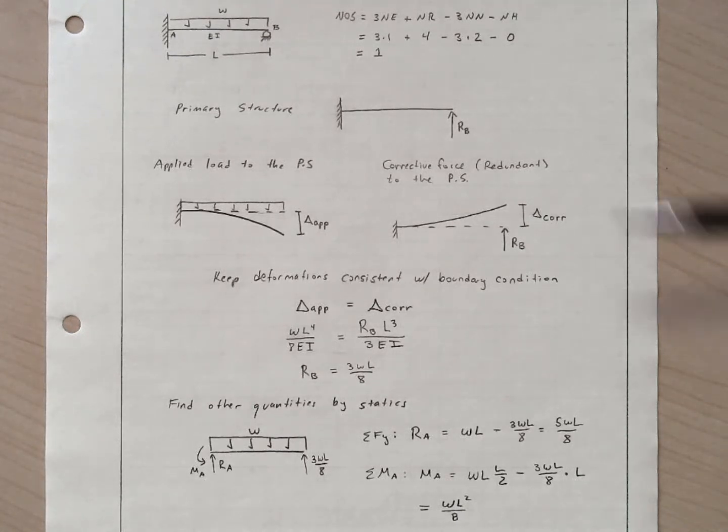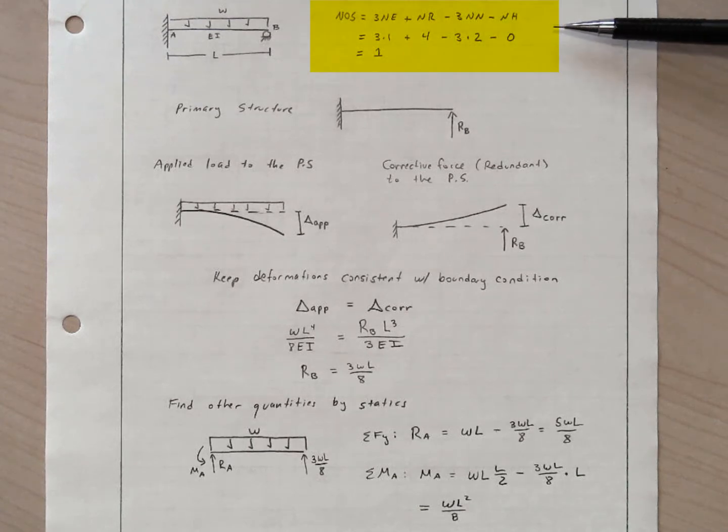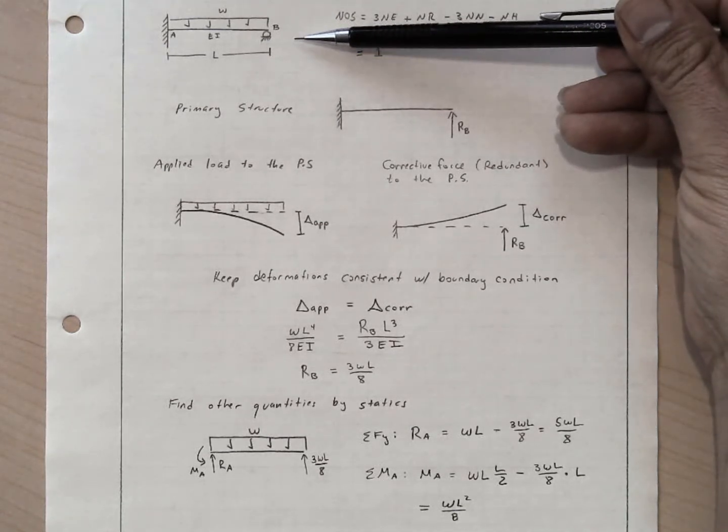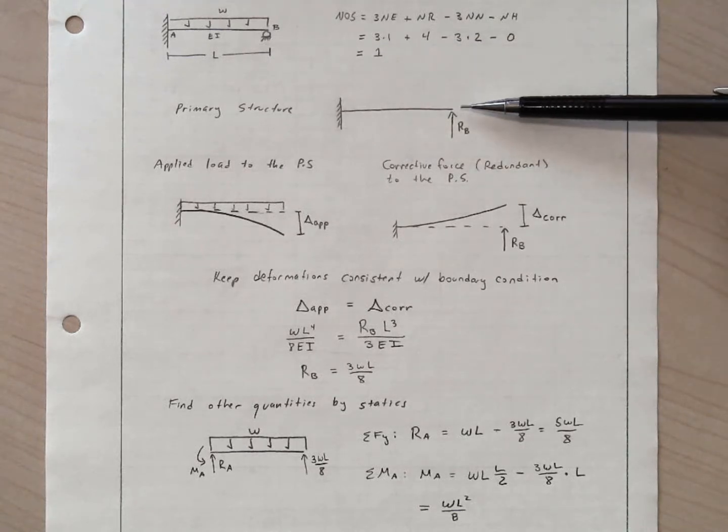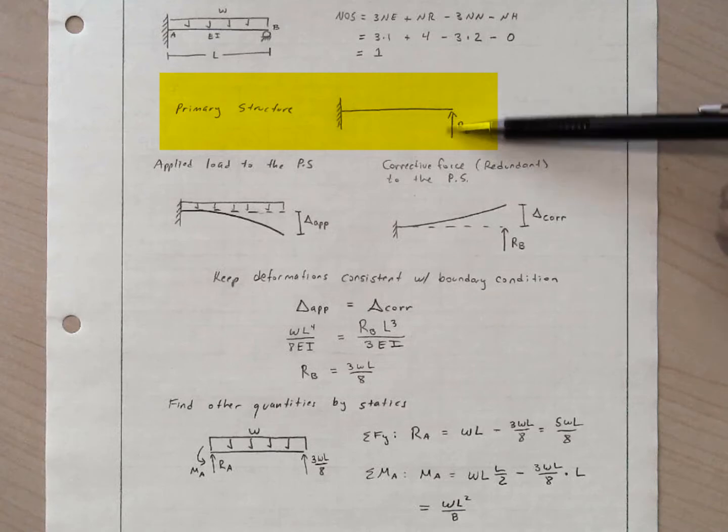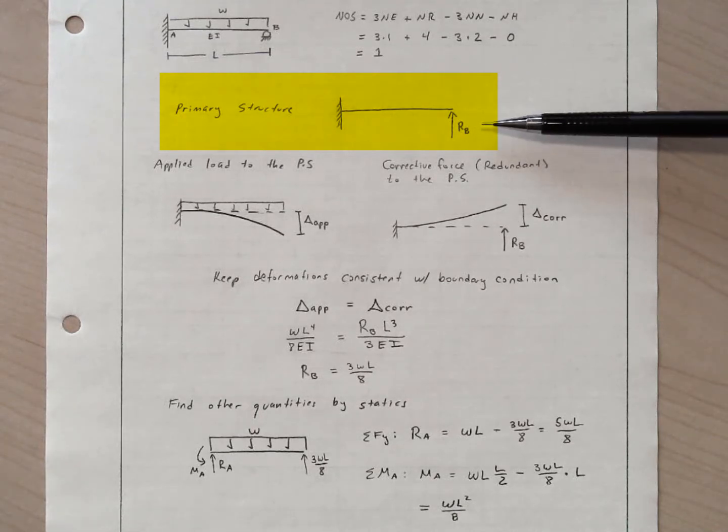First, we determine the degree of indeterminacy. We make sufficient cuts or remove a sufficient number of reactions from the indeterminate structure to render it determinate. We call that the primary structure. On the primary structure, we indicate the redundant force or forces that have to be there because we removed something. In this case, we removed a support, we removed a roller.